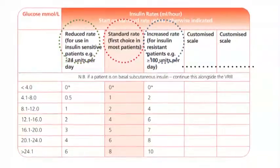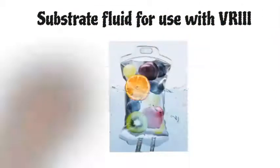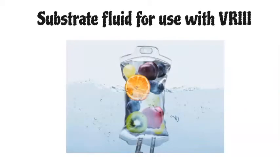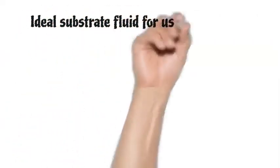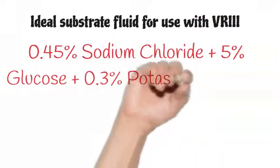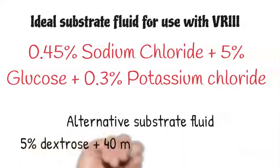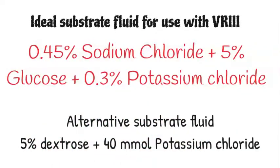Substrate fluid means that while you are giving IV insulin, you also give another fluid that contains glucose so their blood glucose levels don't drop. The ideal substrate fluid to be used with variable rate IV insulin is 0.45% sodium chloride with 5% glucose plus 0.3% potassium chloride. Alternatively, you can use 5% dextrose with 40 millimoles potassium chloride if the above fluid is not available.